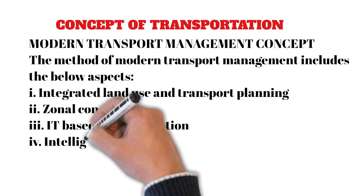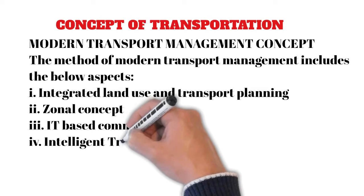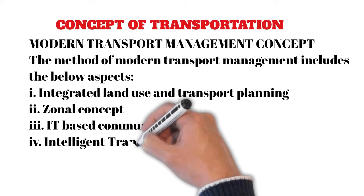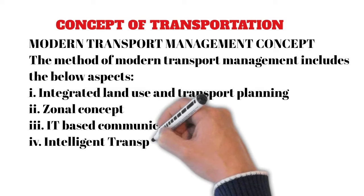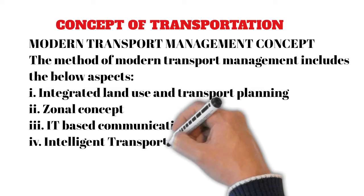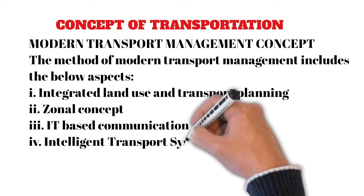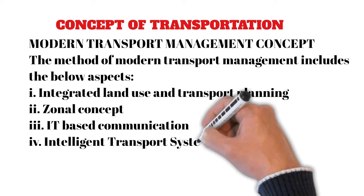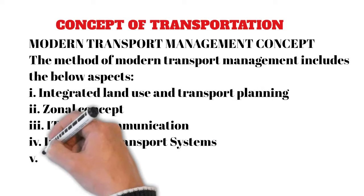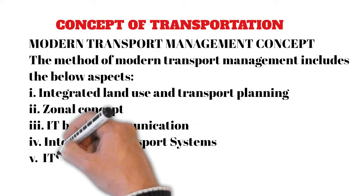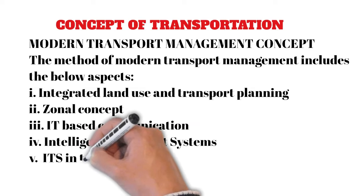Intelligent Transport Systems (ITS): Transport authorities now accept that simply building more roads is not a sufficient solution to the near-universal problem of road traffic congestion. It is essential to find ways of managing traffic more efficiently on existing roads and increasing the use of other modes of transport. The range of field systems available is extensive, including support for commercial freight, public transport services, vehicle telematics, and traveler information.